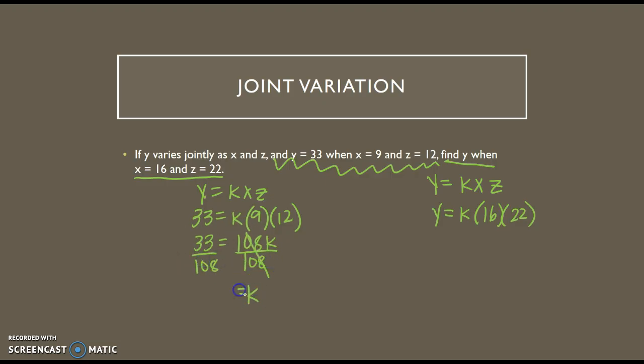So then I get k equals, and 108 is not going to 33, but I can simplify them. 3 goes into 33 to get 11, and 3 goes into 108, 36. So k equals 11 over 36. All right, now we take 11 over 36 and plug it in for the k over here.